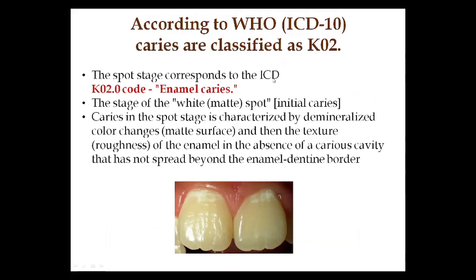The spot stage of caries corresponds to enamel caries, code K02.0. This stage of white or matte spot means initial caries. It is characterized by white demineralization — a color change to a matte surface with roughness of enamel — in the absence of a caries cavity. It is a white matte spot that has not spread beyond the enamel-dentin border.